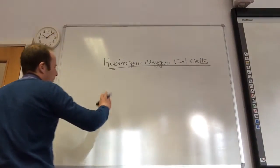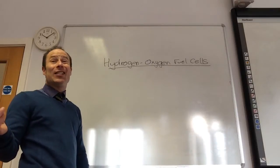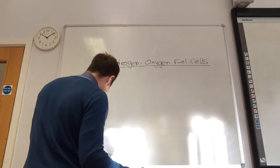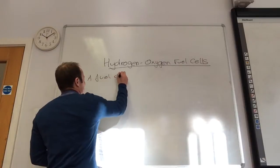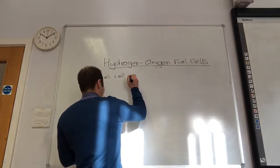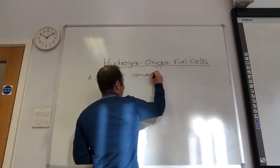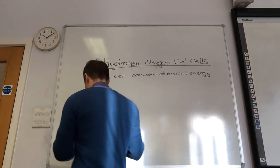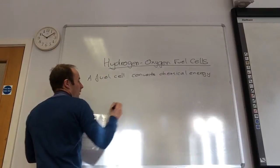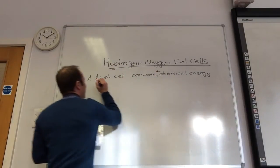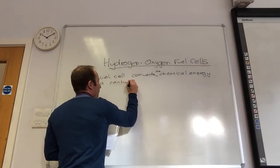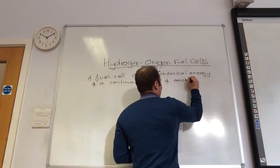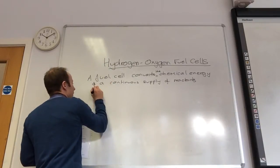We look at the oxygen-hydrogen fuel cell, but we need to define what a fuel cell is. This comes up on the papers quite a lot and you can get yourself in a little bit of a muddle about it. So a fuel cell converts the chemical energy of a continuous supply of reactants into electrical energy.